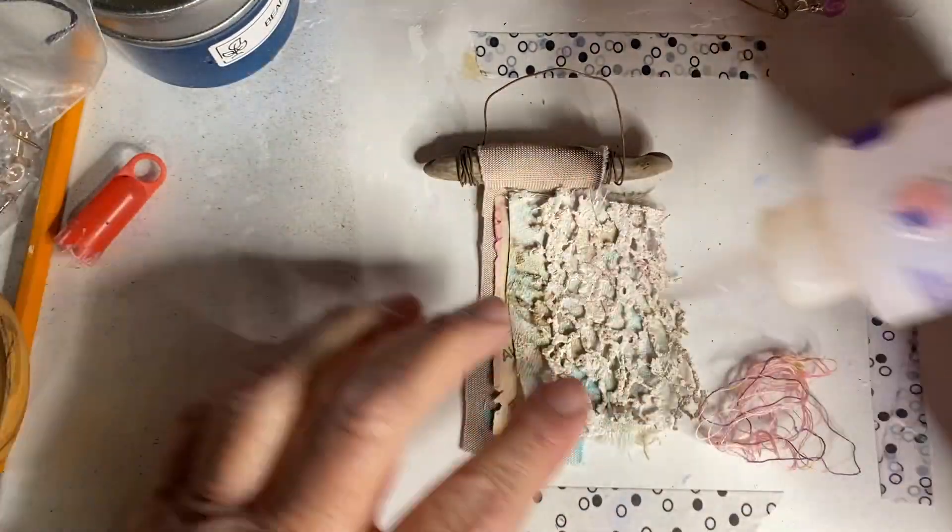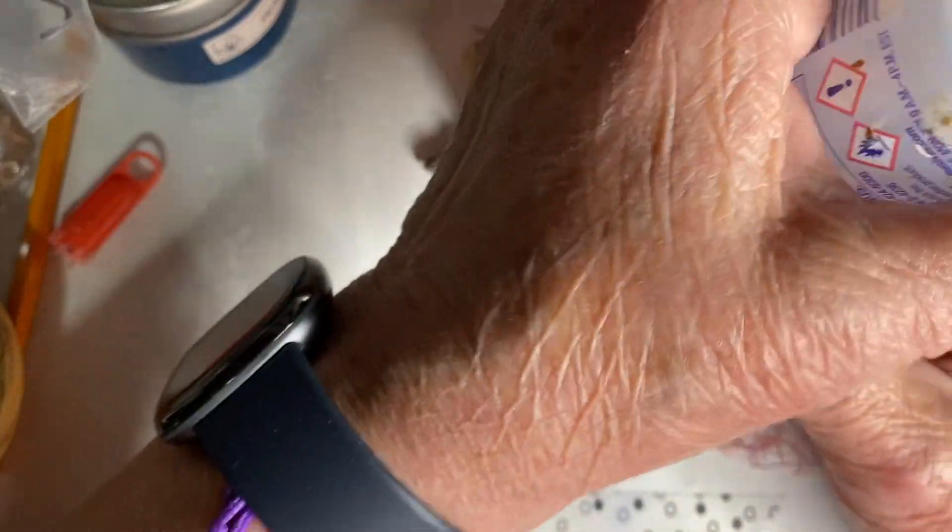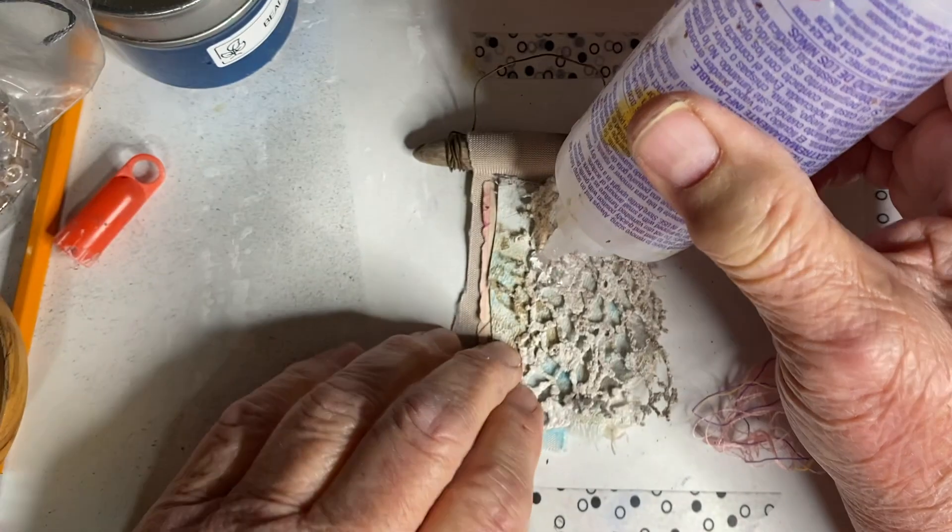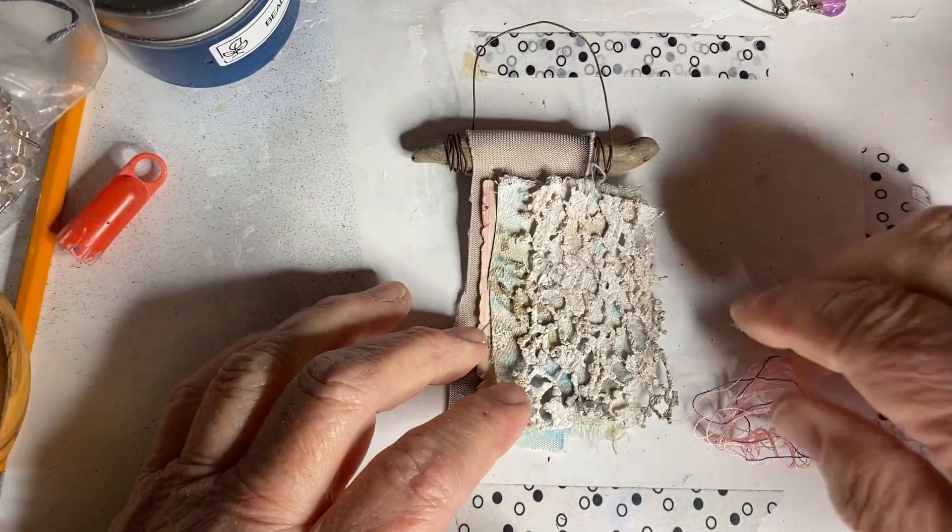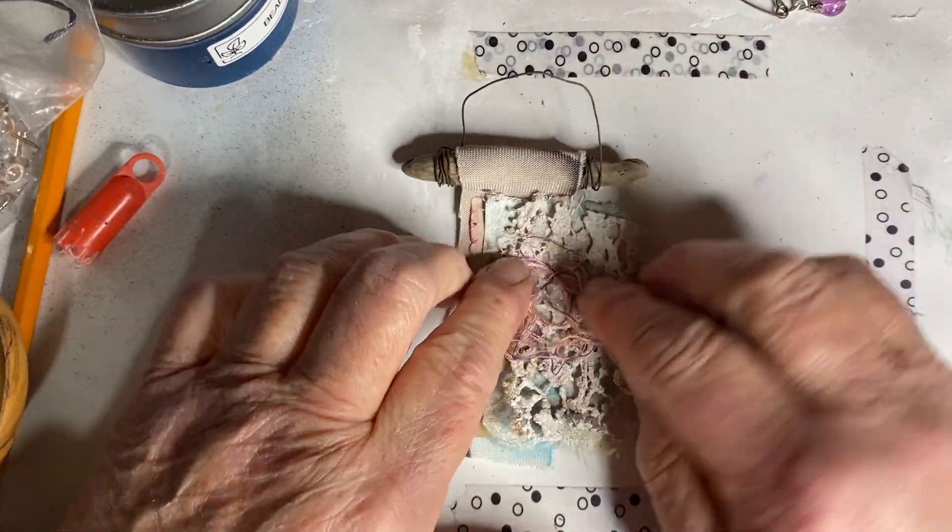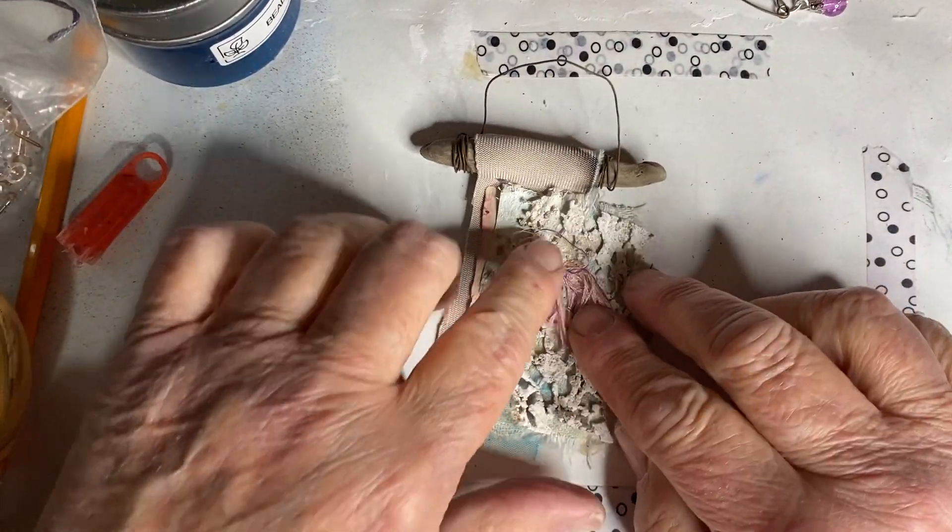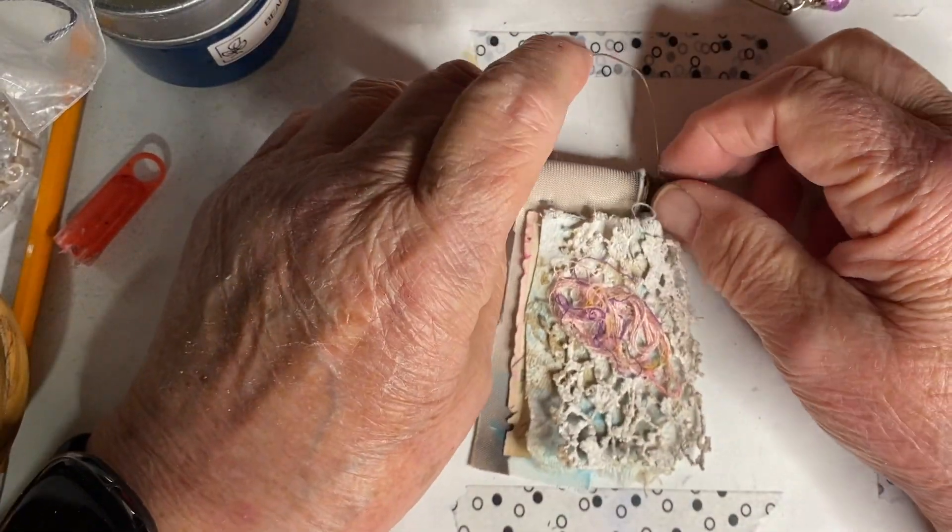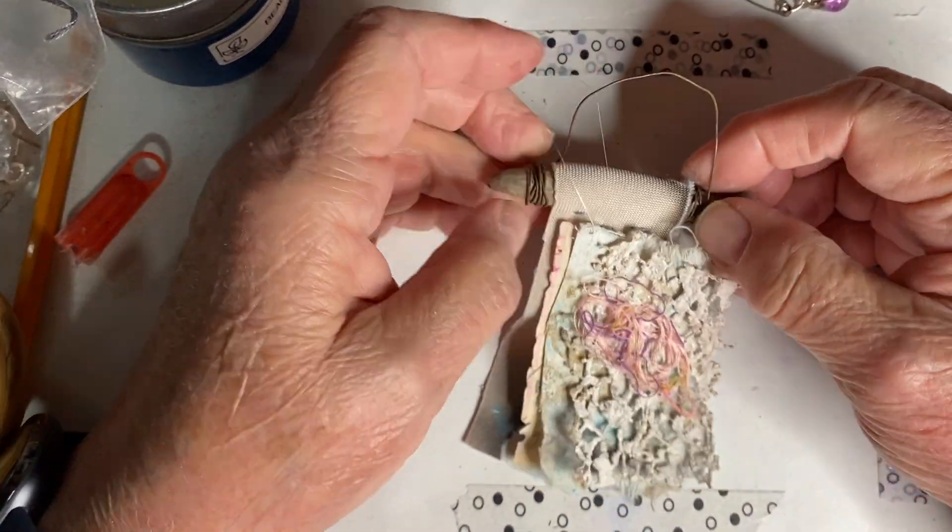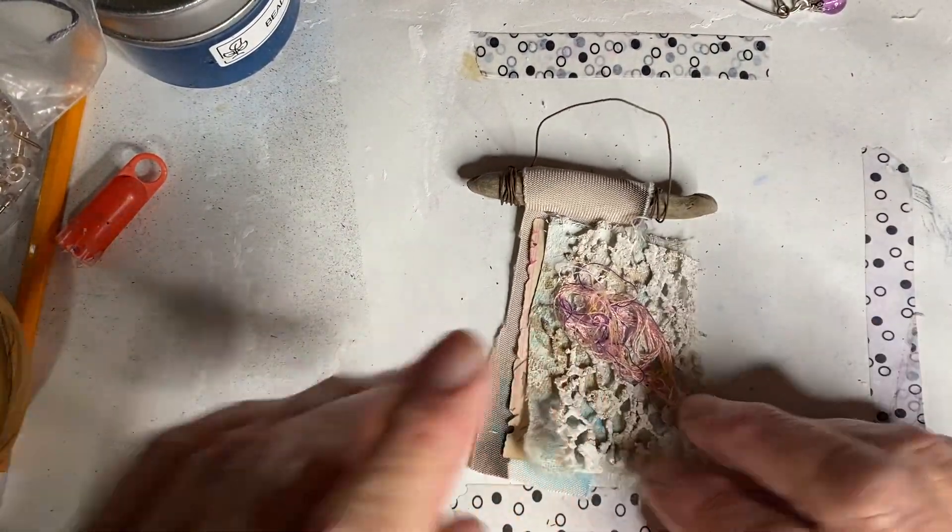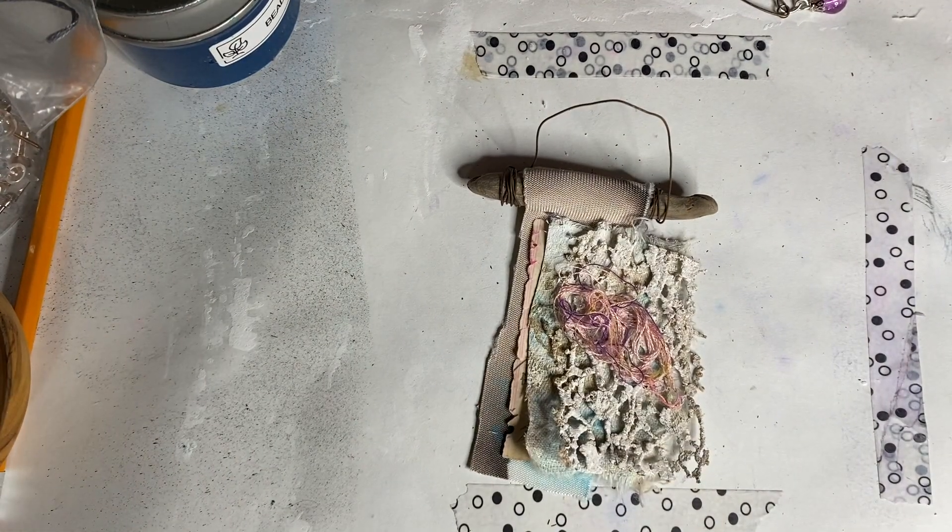And now I've got this little bit of embroidery floss that I want to put down, which is sticking to me. Okay, I'm going to give this a minute to dry a little bit and I'm going to put the top back on my Fabri-Tac and turn it upside down.